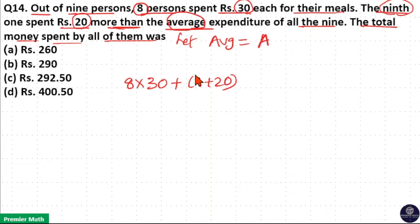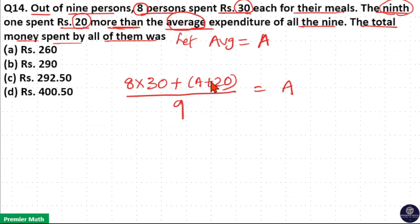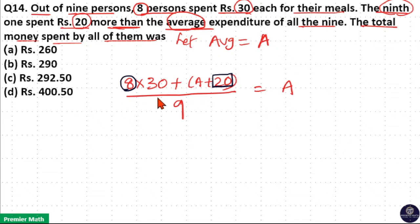Now total money spent by all 9 people is 8 into 30 plus A plus 20, divided by number of people 9, and this is equal to the average. You can see the 9th one spent Rs. 20 extra — that is Rs. 20 more than the average. So if I distribute this extra Rs. 20 equally to the 8 people, then each of the 9 people will spend the average expenditure. That is, if I distribute Rs. 20 equally to 8 people, I can find the average.